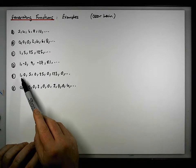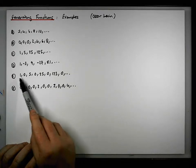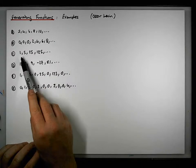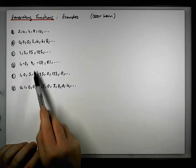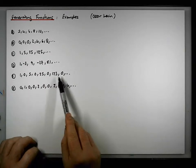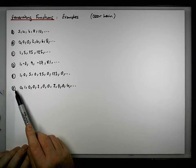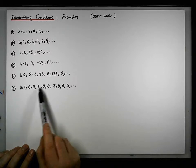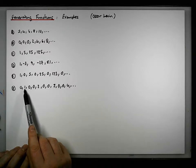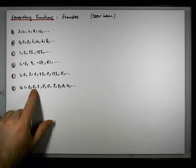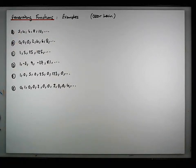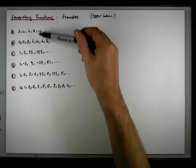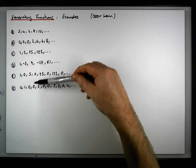Sequence E encodes sequence C but with a zero inserted between each term. Sequence F has the natural numbers 1, 2, 3, 4 with two zeros between each value, and the natural numbers are also shifted across by one place. We're going to rely on some fundamental generating functions, as well as generating functions associated with these particular sequences.